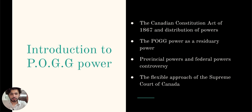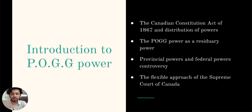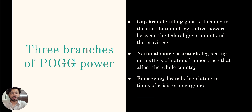We will be focusing on peace, order and good government, which is a residuary power that encompasses all matters not specifically assigned to either of the heads of powers. This power has three branches: the gap branch, the national concern branch, and the emergency branch. Let's dive deeper into each branch.